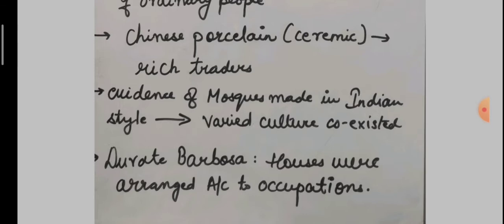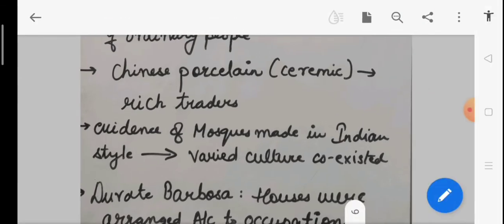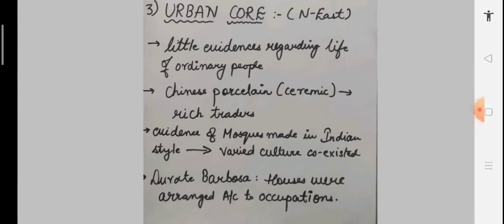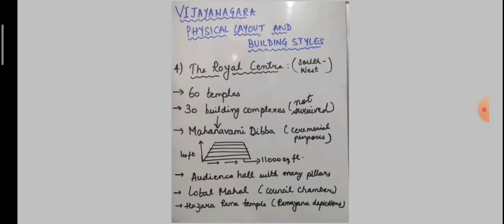shrines and small temples, which pointed to the prevalence of a variety of cults in a particular area. They also have various water tanks in the temple so that they can feed the town dwellers as well. So this was the urban core, which basically formed the northeastern part of the Vijayanagara Empire.